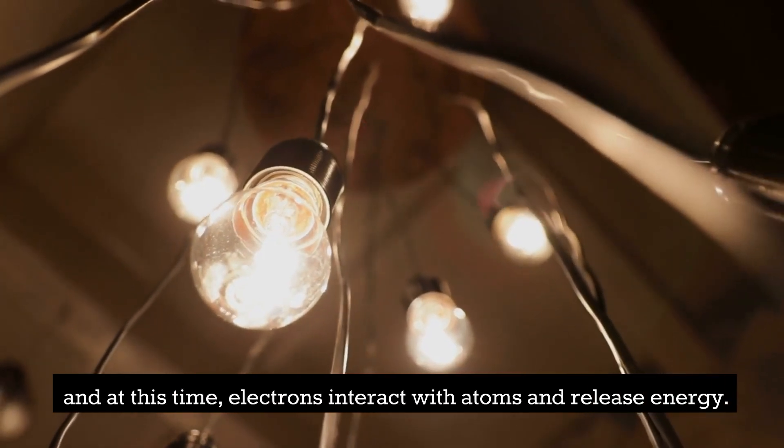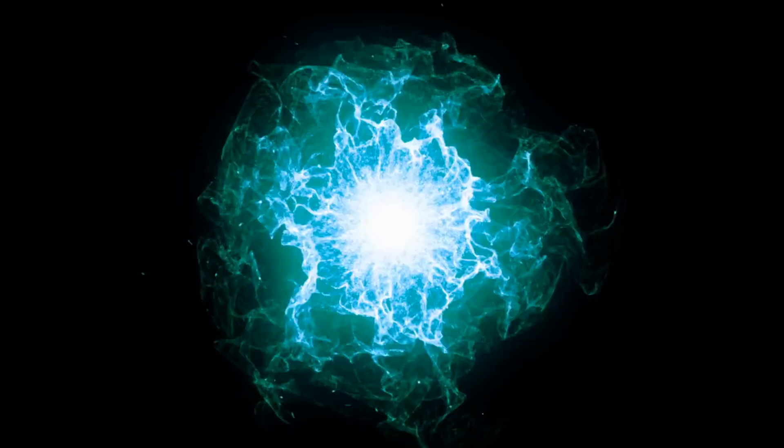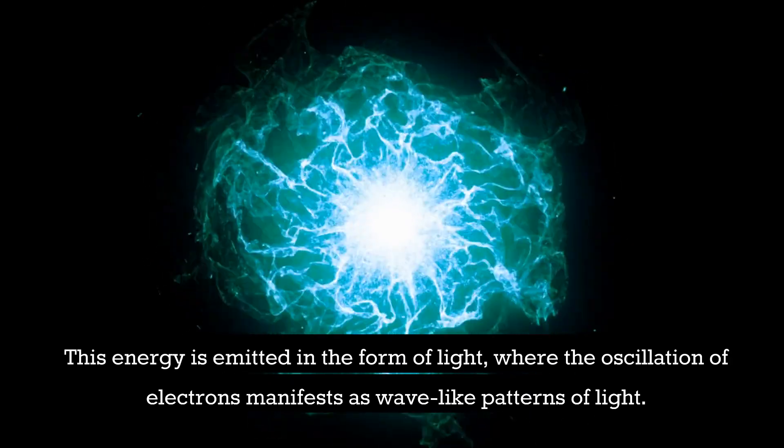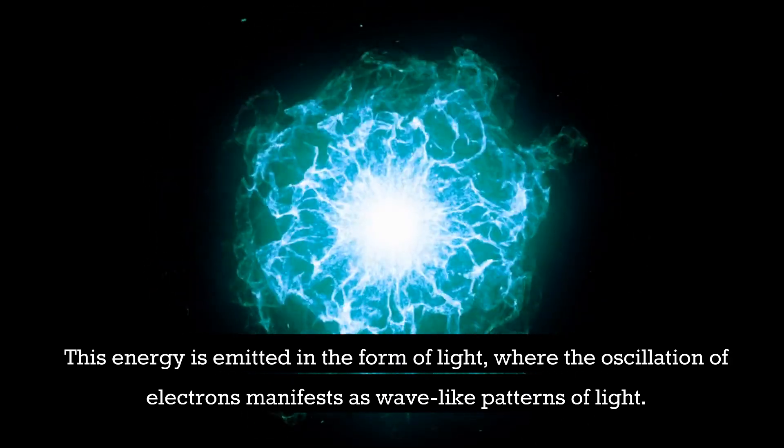At this time, electrons interact with atoms and release energy. This energy is emitted in the form of light, where the oscillation of electrons manifests as wave-like patterns of light.